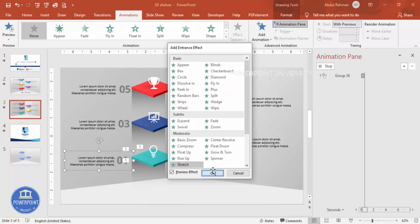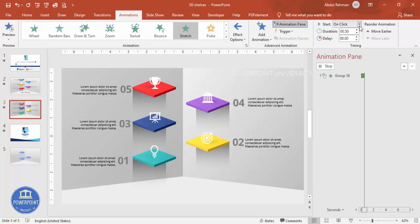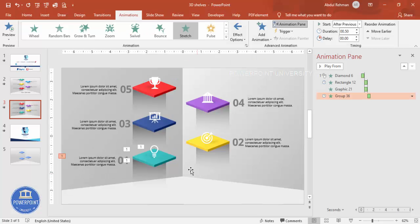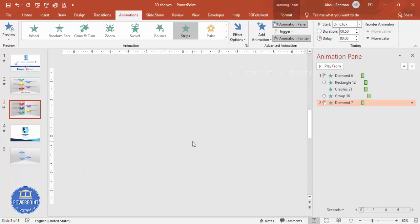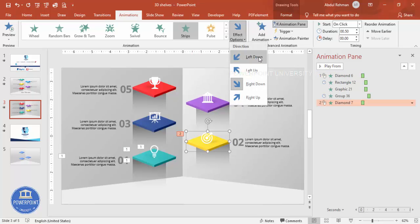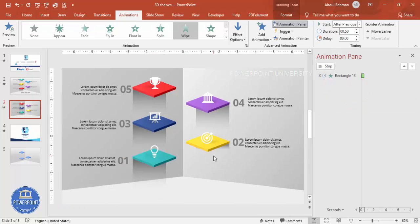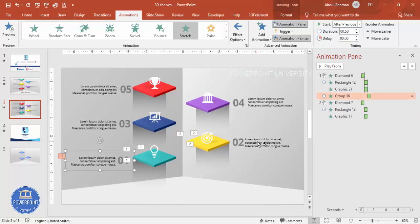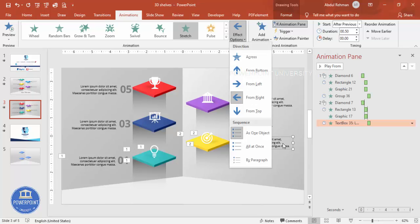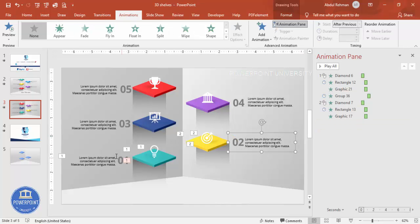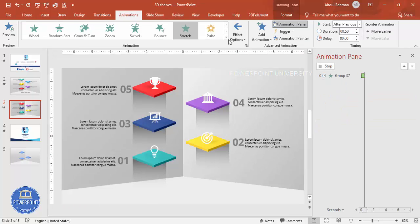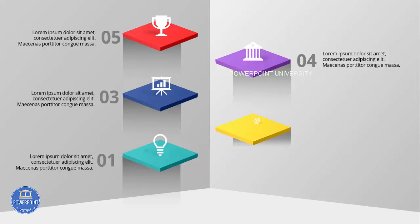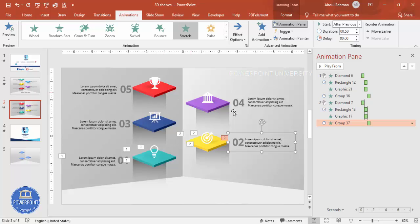Group the text elements with Ctrl+G, then add animation. Select 'Stretch from Right' set to After Previous. Use the Animation Painter to copy these effects to the remaining shelves. Group each remaining text pair with Ctrl+G and apply the Stretch animation. For the last group, set the stretch direction to 'From Left'. When you play the slide, each step animates in sequence on click.